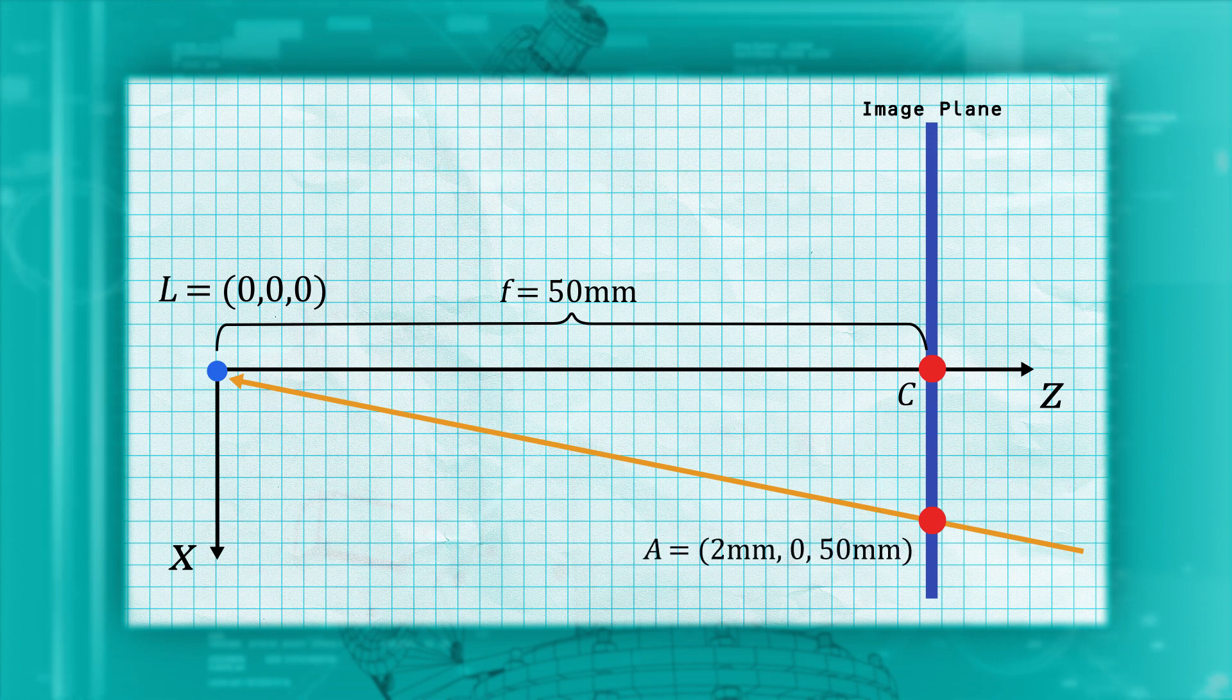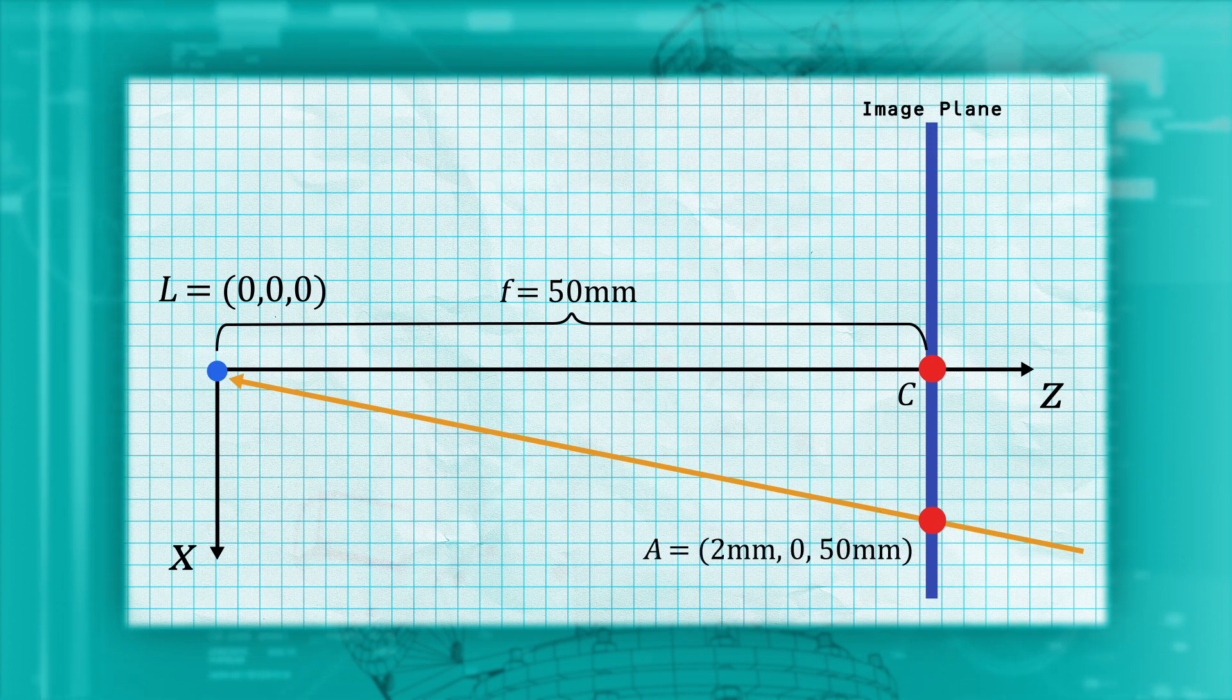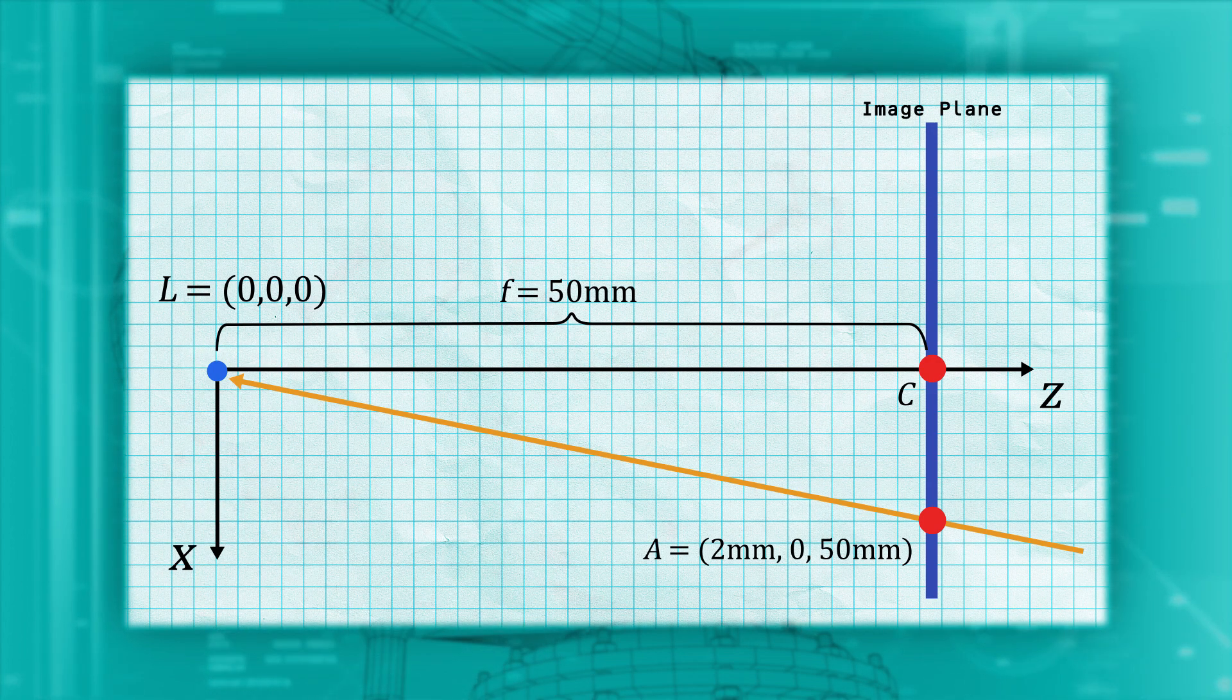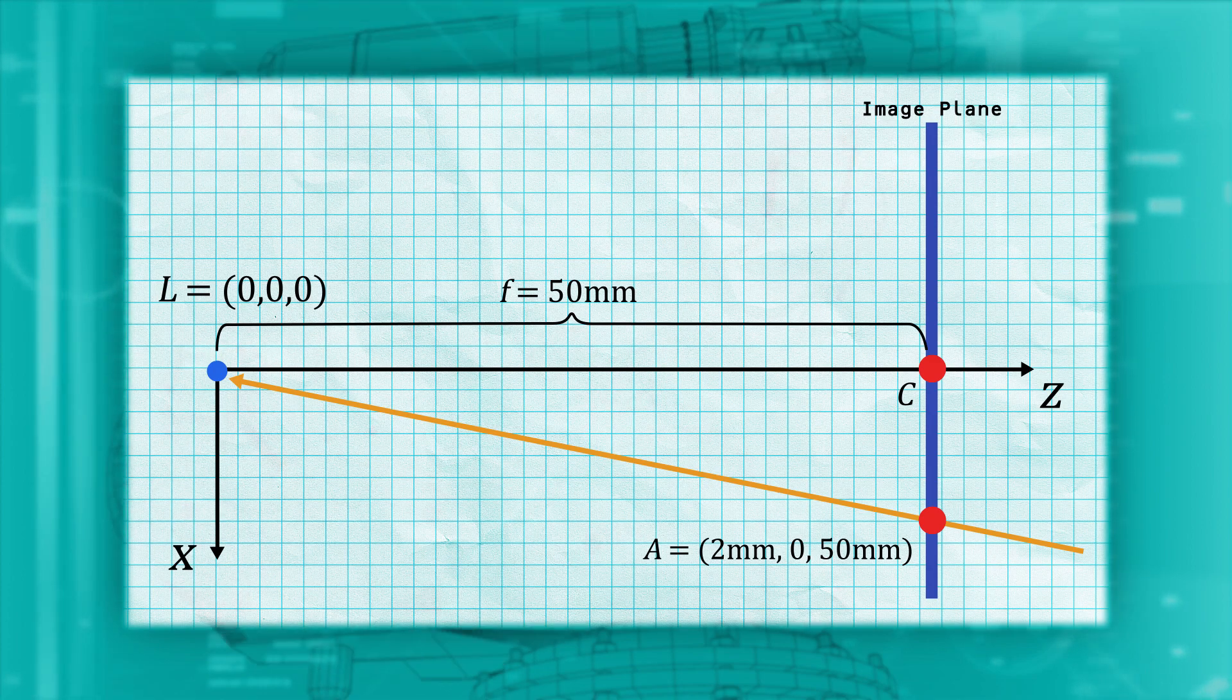Now we know the location of the point on the image plane corresponding with our feature: X equals 2 millimeters and Z equals 50 millimeters. We also know that the line must go through the camera center: X equals zero and Z equals zero.